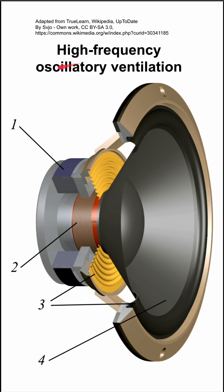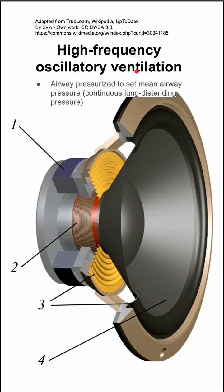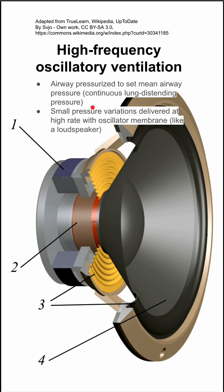Here are some notes on high-frequency oscillatory ventilation. This is a ventilation mode where the airway is pressurized to a set mean airway pressure, also called a continuous lung distending pressure. Small pressure variations are then delivered at a high rate with an oscillator membrane, like a loudspeaker.